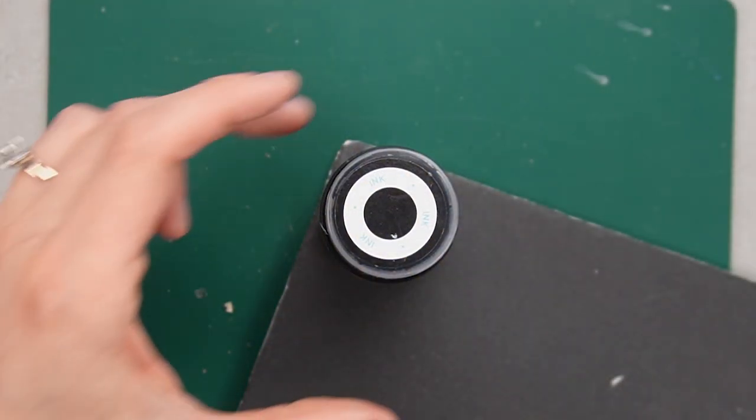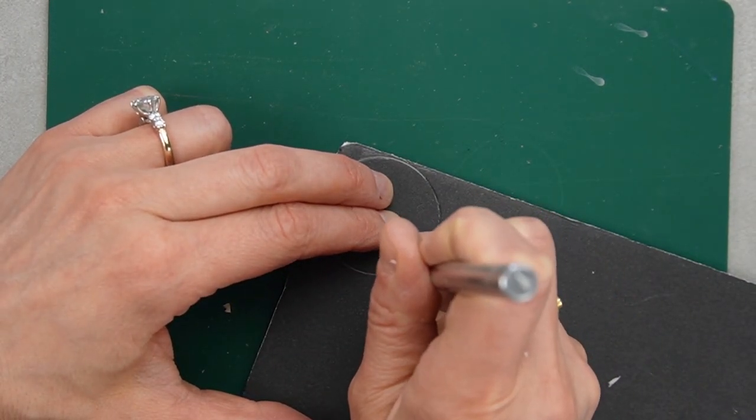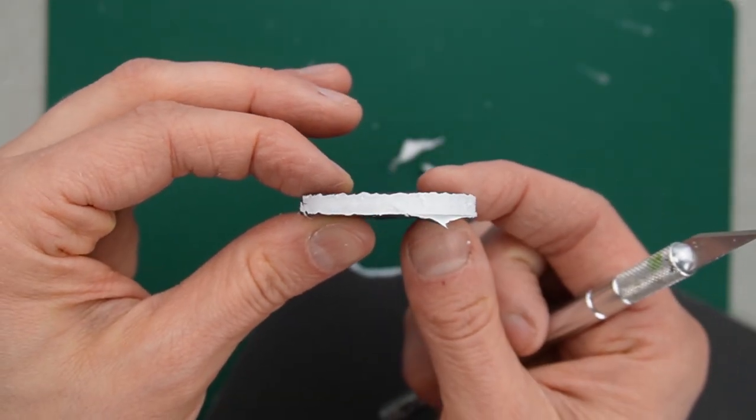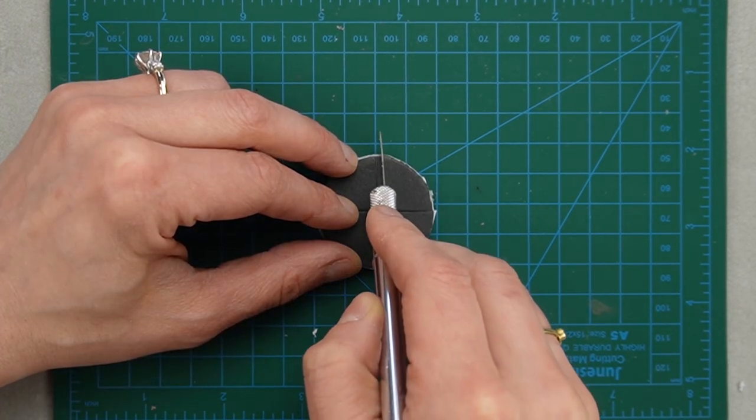I drew a circle with a 1.5 inch diameter onto some foam core. I'm cutting straight up and down so the edges are straight and not angled. I'm cutting my circle into 4 even pieces.